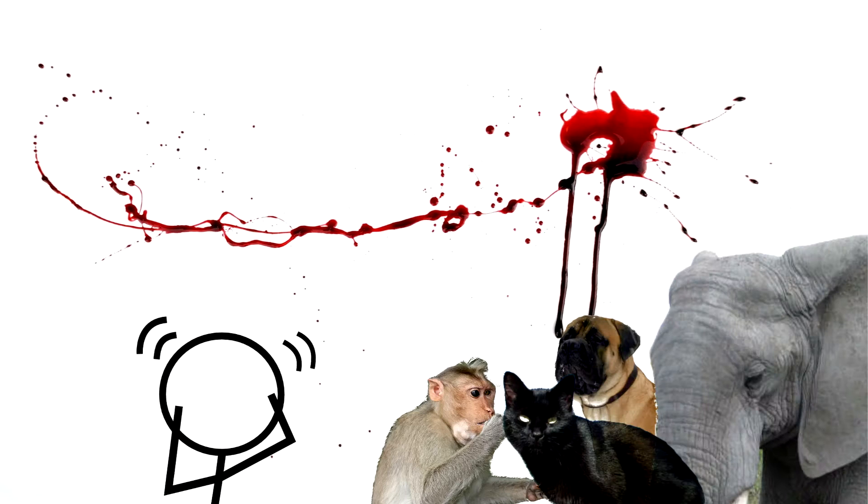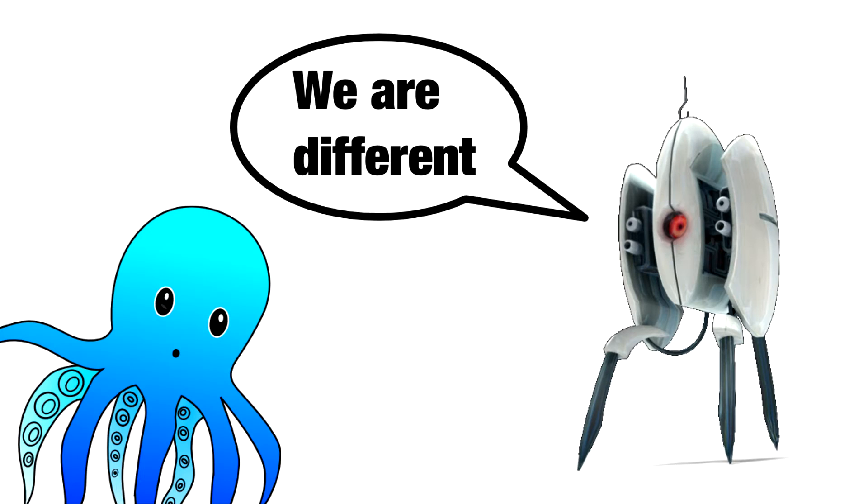Oxygen-saturated human blood has a bright red color, just like the blood of many other animals, but some animals are different in this respect.